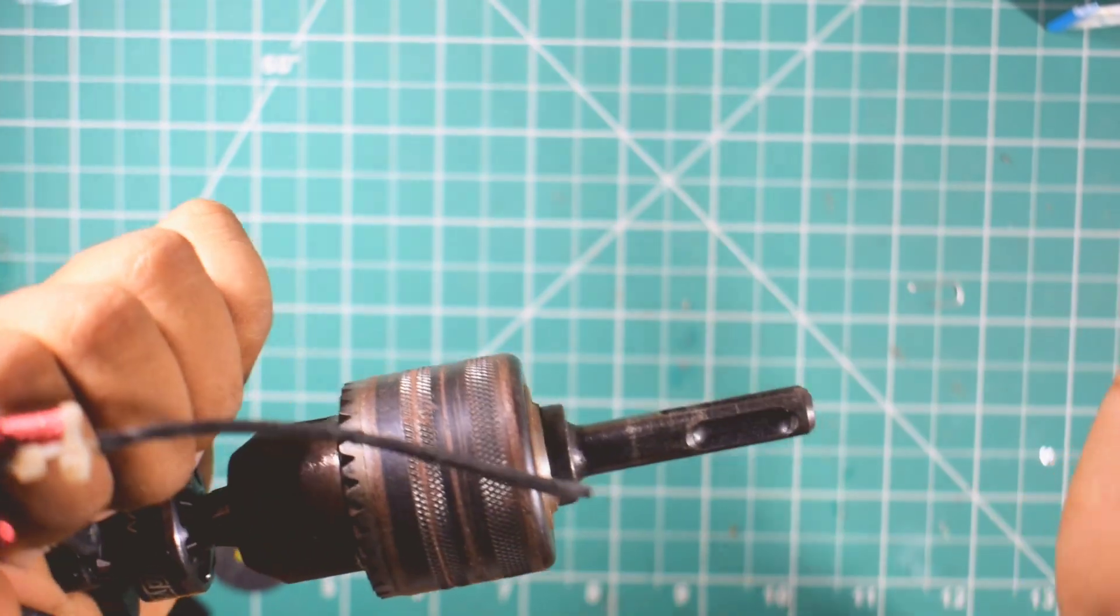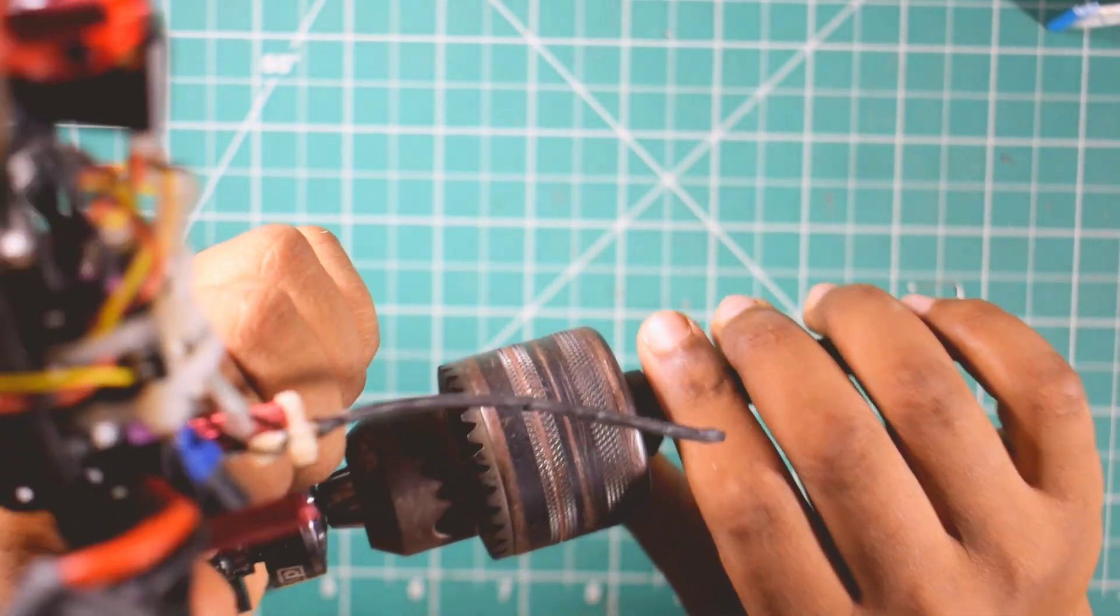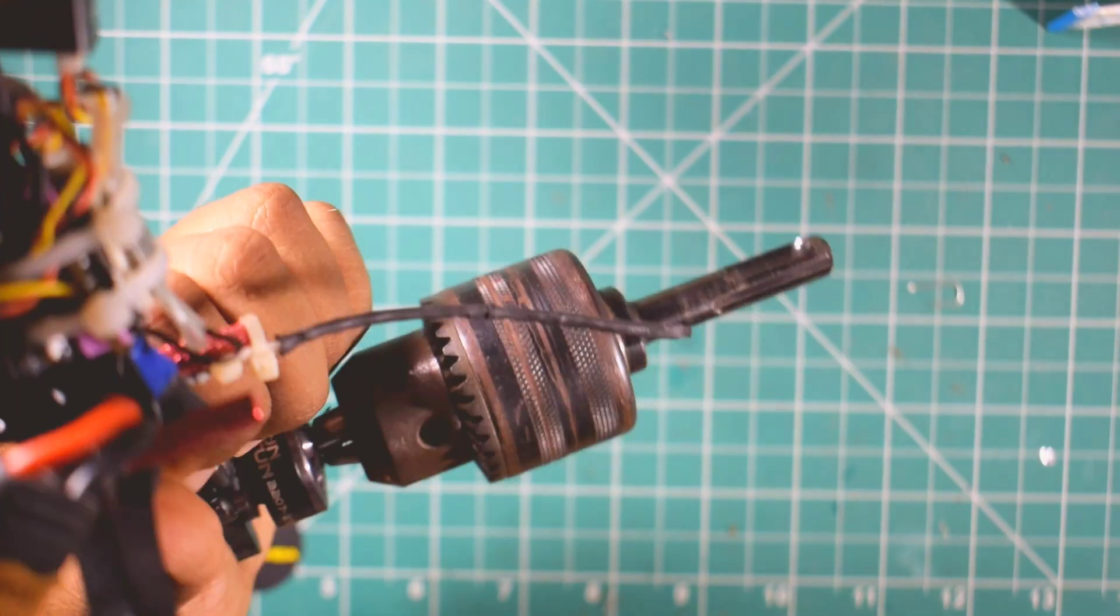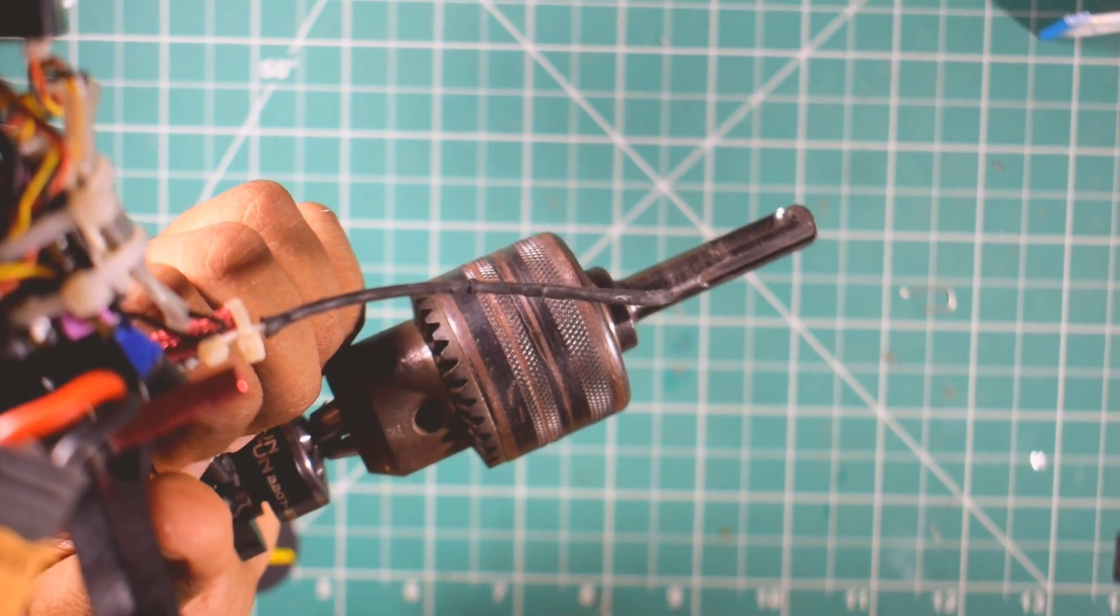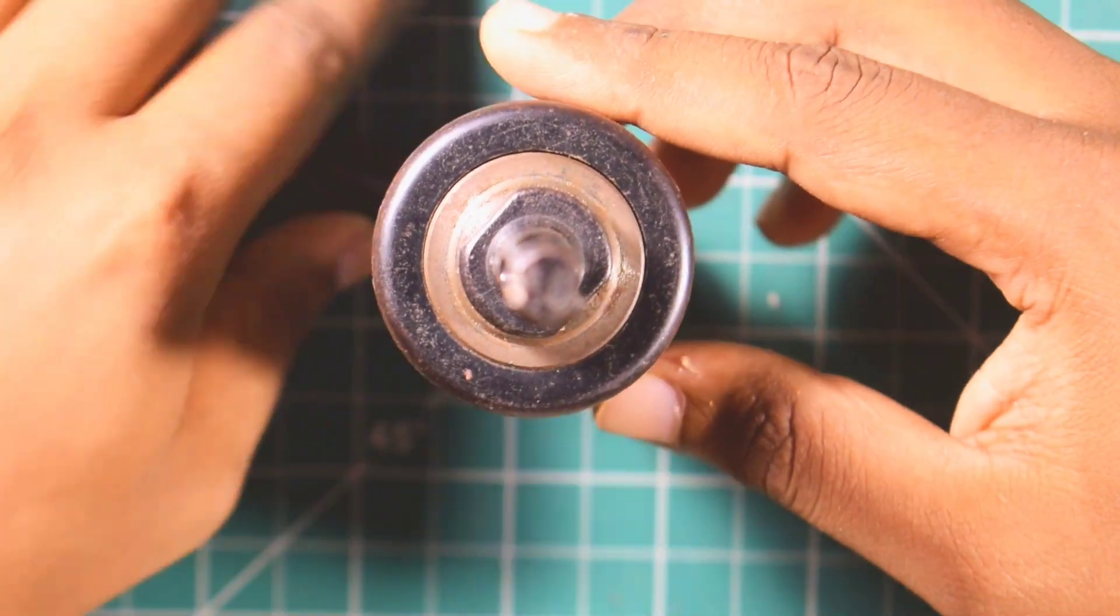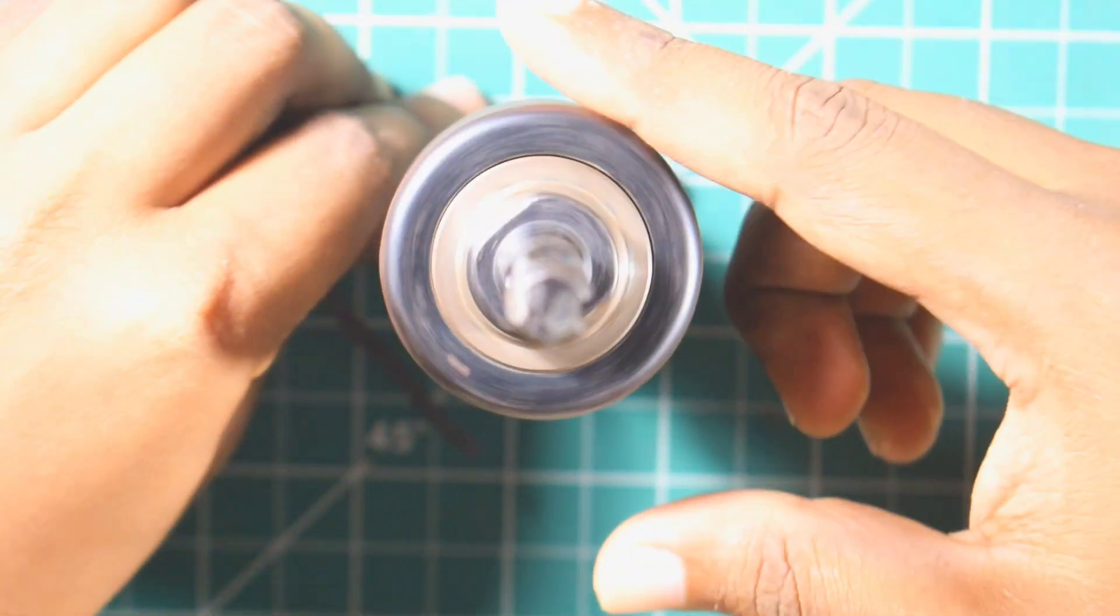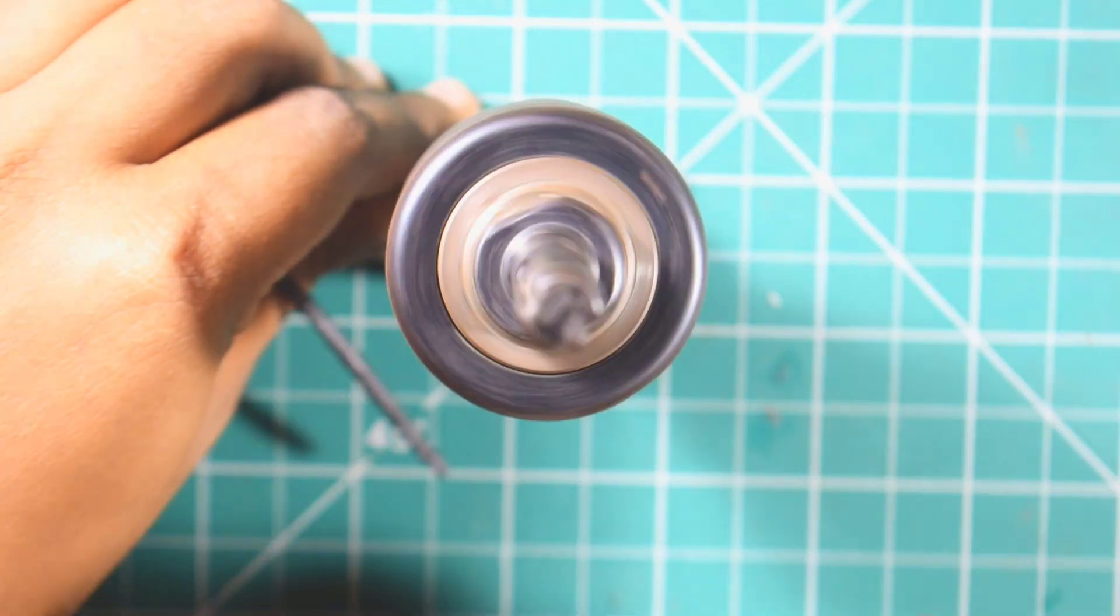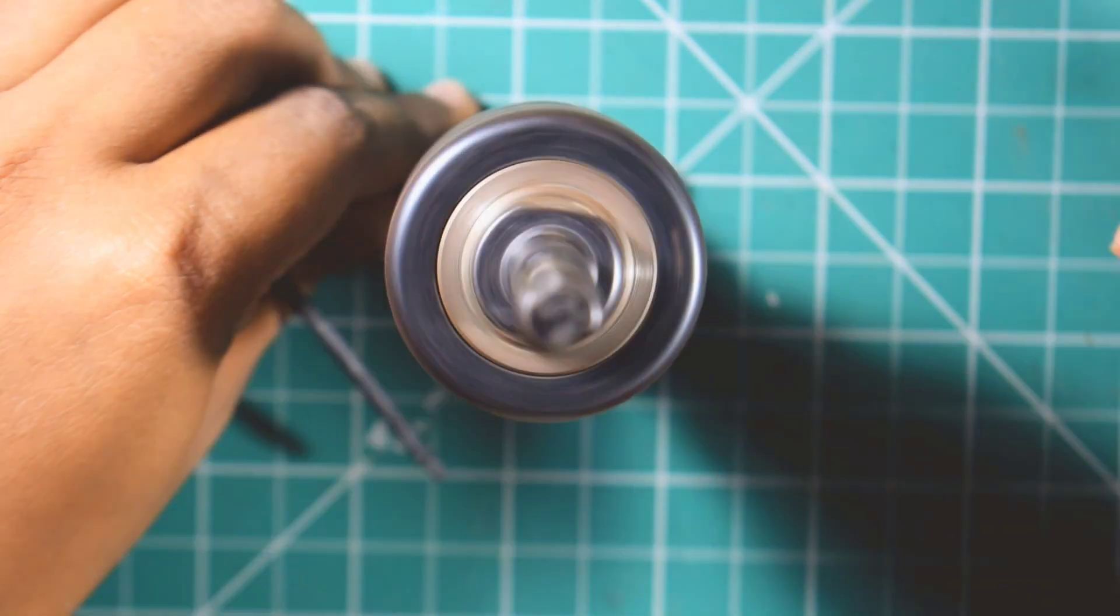So you do this until the shaft is perfectly aligned. You rotate it and you can also check using the reference wire that we have made. See, you can totally see how much the shaft has been corrected. There's not very much wobble there.